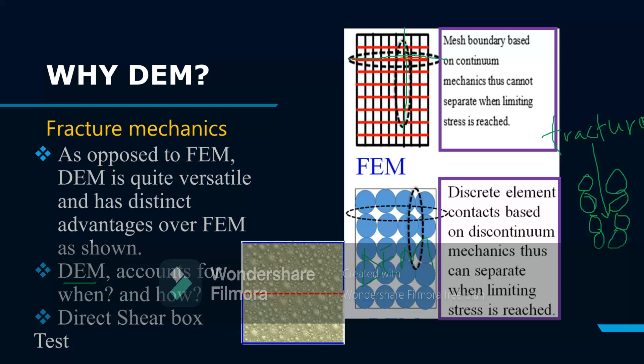In DEM we say it accounts for when and how. The calculations are recorded as a movie and timed, so you can tell exactly when the first bond breaks and how it progresses.